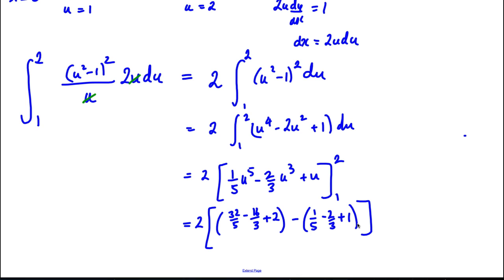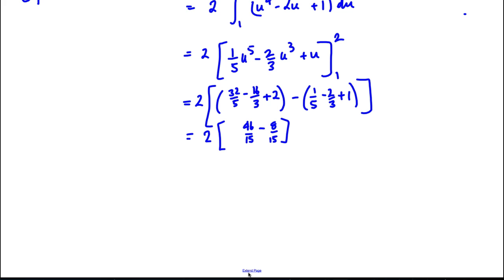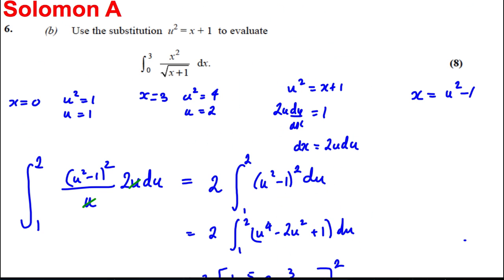It's just a case of working these out. The expression evaluates to 2 times (46/15 - 8/15), giving us a final answer of 76/15, which can also be written as 5 and 1/15 — and we're done.